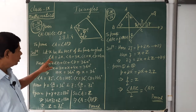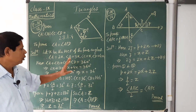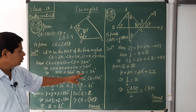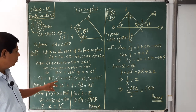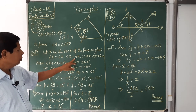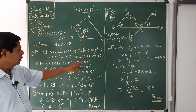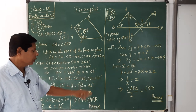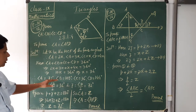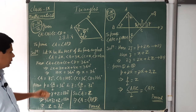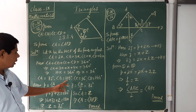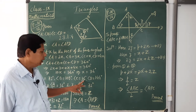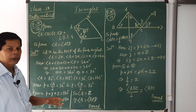With X = 36°, all four angles are: angle A = 2 × 36 = 72°, angle B = 3 × 36 = 108°, angle C = 36°, angle D = 4 × 36 = 144°. Verification: 108 + 72 = 180, and 144 + 36 = 180, so total = 360°.